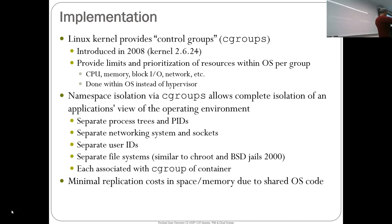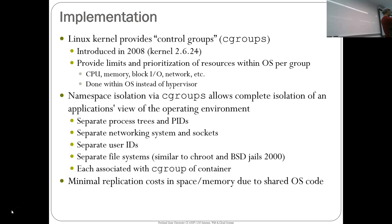When you enter a container and do a process list (PS), you get a completely different process tree than another running container. Both containers have process ID one from their perspective. But in the host OS, those map to real processes with different PIDs — for example, 13,000 and 13,001. The container name plus a resource like a process ID maps to the actual PID on the host. This applies throughout: networking, IP addresses, file systems, user IDs — everything is namespaced per container.